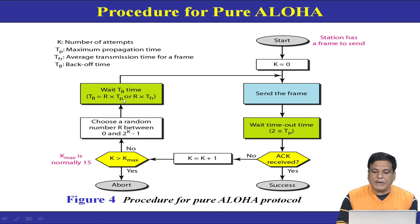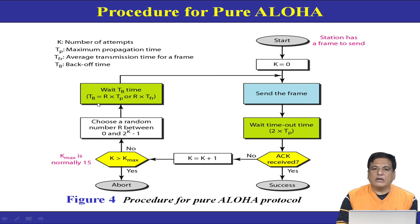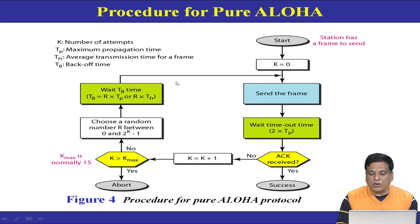The station waits a backoff time equal to r×tp. The purpose of the backoff time is to introduce randomness so that if a collision occurs, each station waits a random amount of time before retrying. If a fixed wait time were used, the frames would collide again. By waiting a random amount of time, the chances of repeated collisions are reduced. This process continues — and this is the procedure followed in Pure ALOHA.